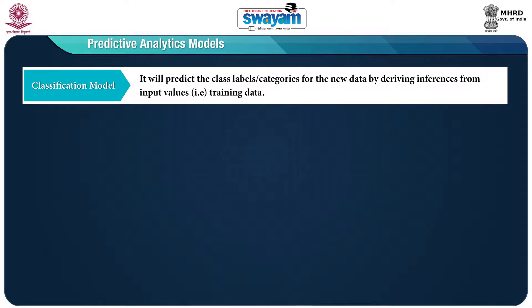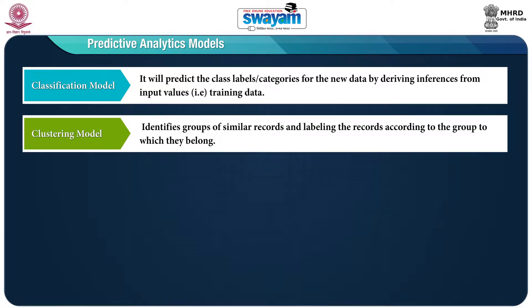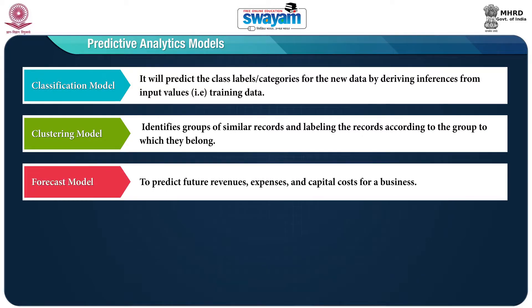The various predictive analytics models are: first is the classification model — this model will predict the class labels or categories for new data by deriving inferences from input values, that is the training data. Next is the clustering model — this model identifies groups of similar records and labels the records according to the group to which they belong.